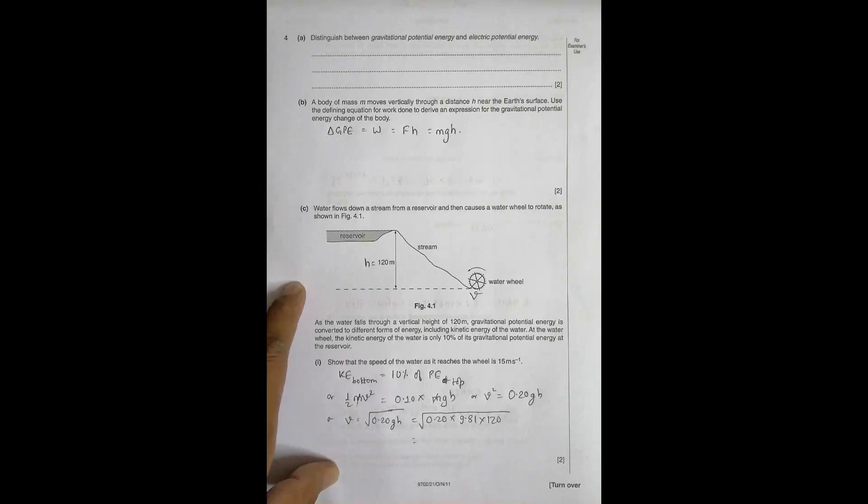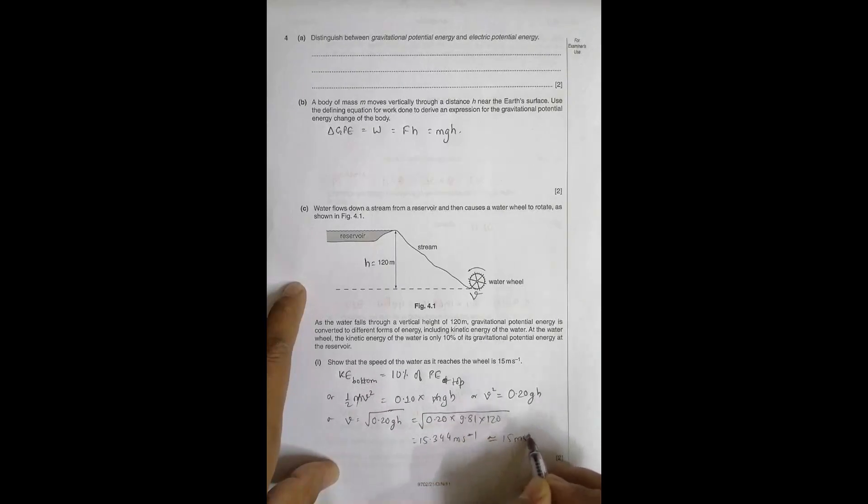and then its root, square root is equal to, so this comes to be equal to 15.344 meter per second, which is approximately equal to 15.344 meter per second.